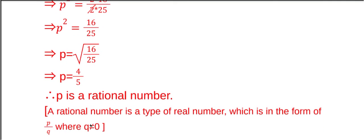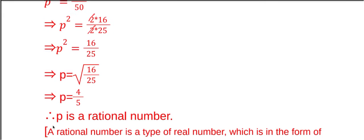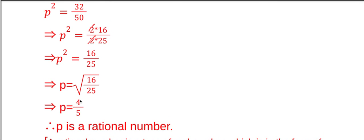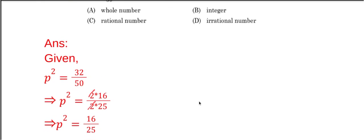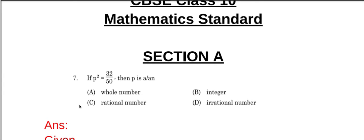P is a rational number, since we know that a rational number is a real number which is in the form of P by Q, where Q is not equal to 0. Here, P is equal to 4 by 5, so this is a rational number. Our answer is P is a rational number, and option C is the correct answer.